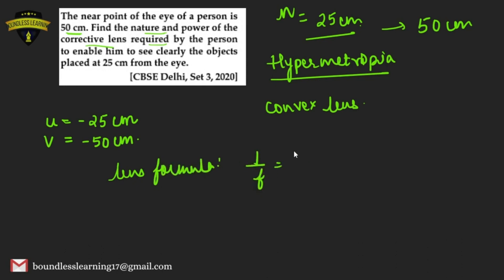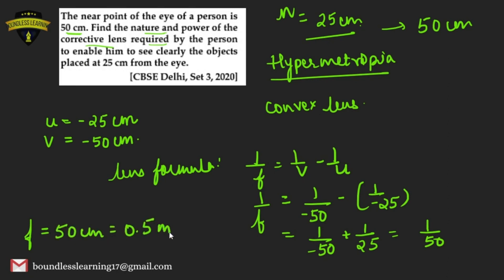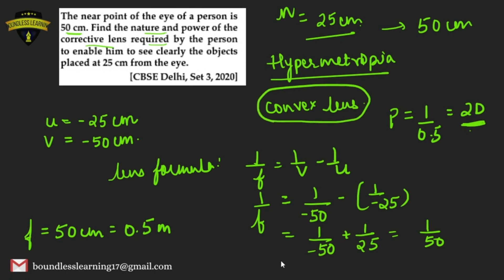Applying the lens formula: 1/f = 1/v − 1/u = 1/(−50) − 1/(−25) = 1/(−50) + 1/25 = 1/50. So f = 50 cm = 0.5 m, and power = 1/0.5 = +2 diopters. The positive power confirms it is a converging convex lens.